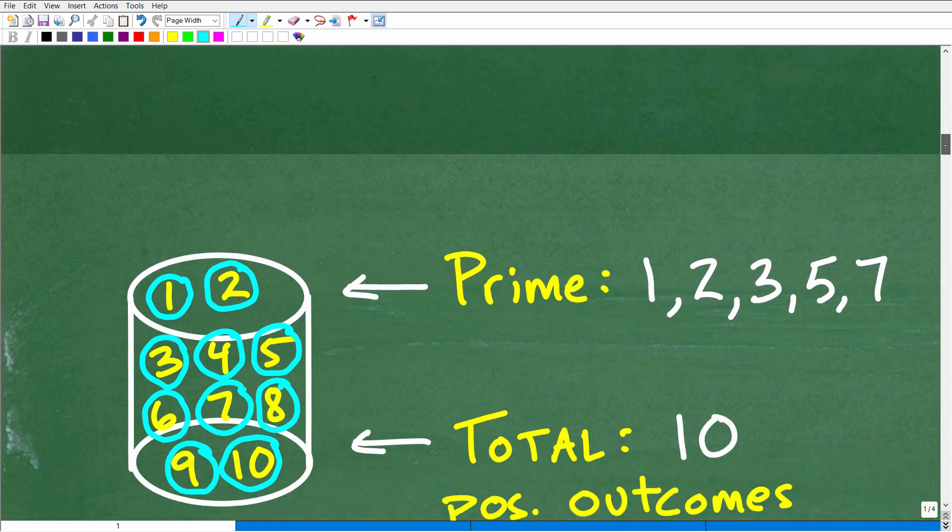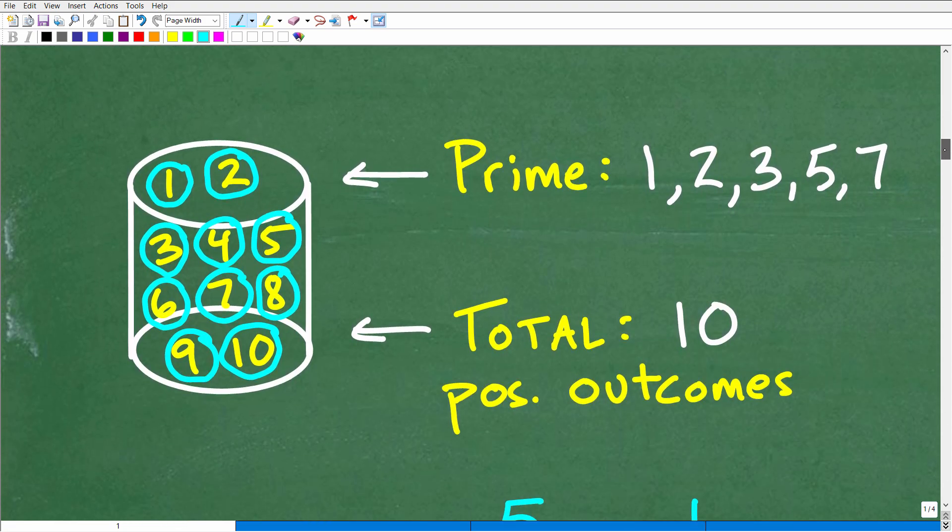All right, so let's go back to our problem here. And here is our lovely jar of numbers. So the first thing we need to do is we're looking for the odds of getting a prime number, selecting a prime number. So it's probably a good idea for us to determine how many prime numbers are inside this jar. So let's go ahead and count them out. So we've got 1. 1 is of course a prime number.